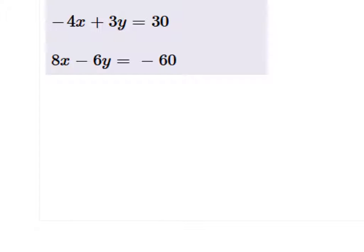So if I choose to eliminate the x's, I can see right away that if I multiply that top equation by 2, I'll have the same coefficient that is the opposite. So I'm going to do that, multiply this by 2. All right, so that gives me a new equation,